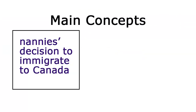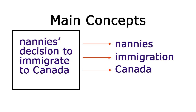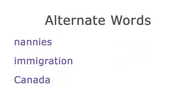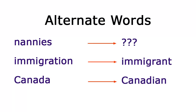Finally, think about how you will search. Try to pull out the main concepts in your topic. For example, if our topic is foreign nannies' decision to immigrate to Canada, our concepts will be nannies, immigration, and Canada. Think of other words people might use to talk about your concepts. People might refer to immigrants rather than immigration, or Canadian instead of Canada.